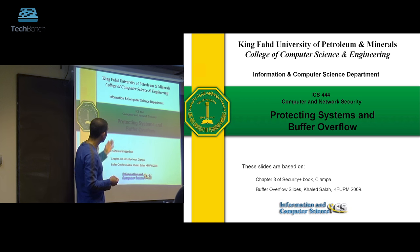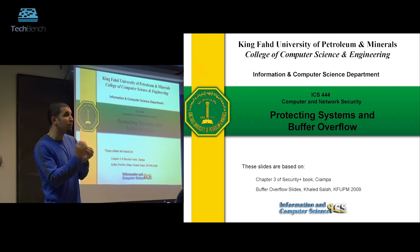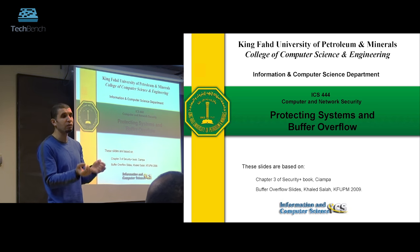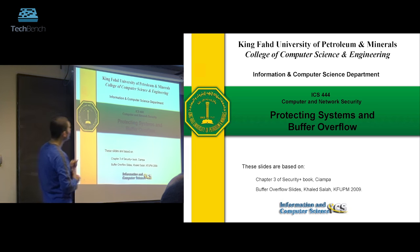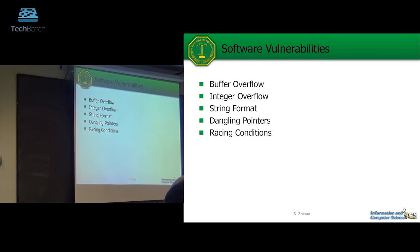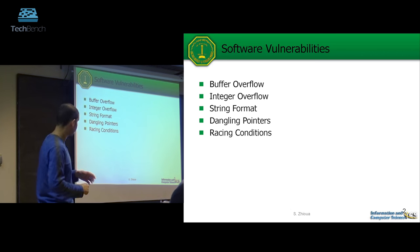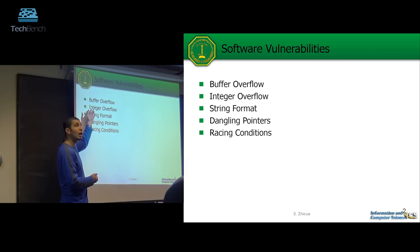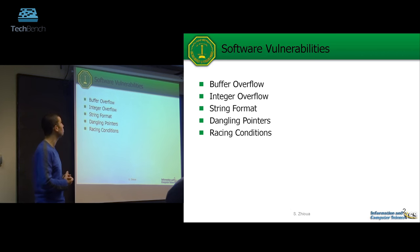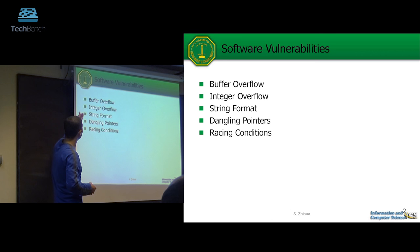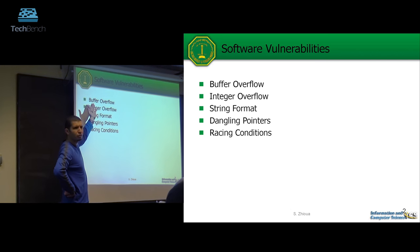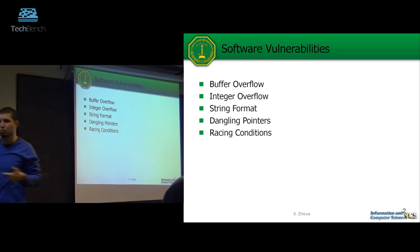This lecture is about protecting software systems. The most common type of vulnerabilities — these small details that lead to exploitation — the most common one is buffer overflow. There are other types of vulnerabilities: integer overflow, string format, dangling pointers, race conditions — all these are weaknesses in software. When you write code you might end up with one of these, and an attacker might take advantage of that to compromise the system. Essentially, these are all variants of buffer overflow.